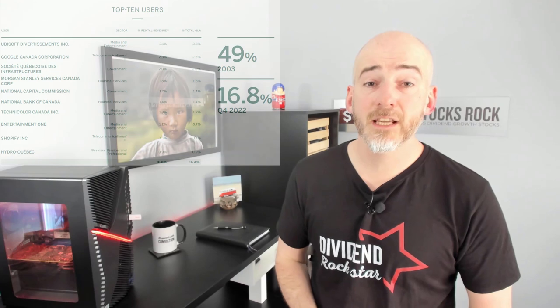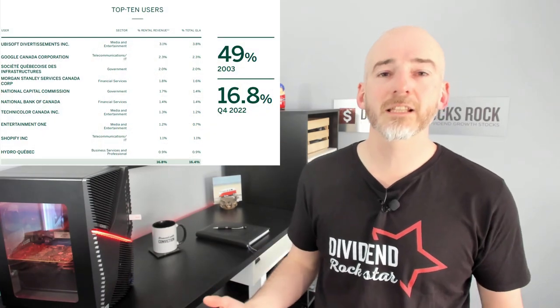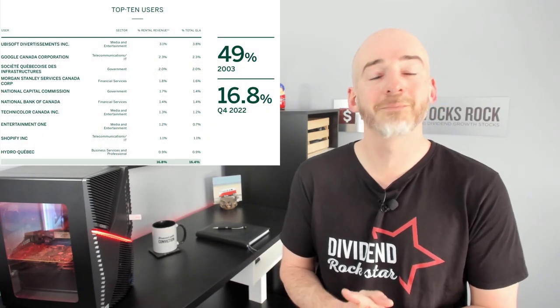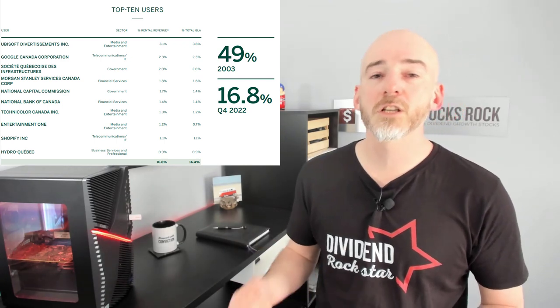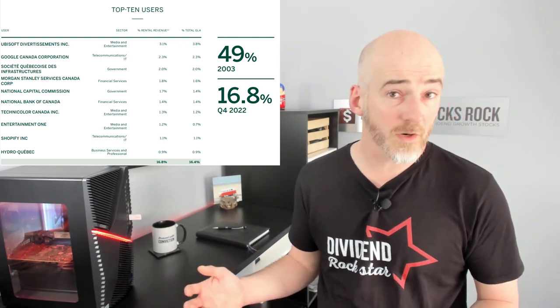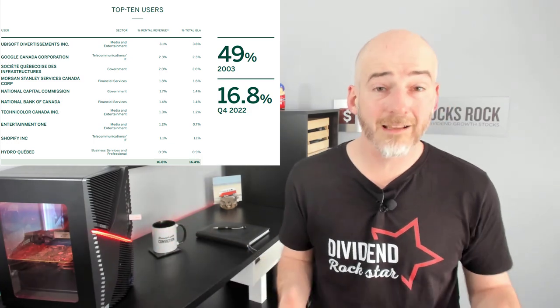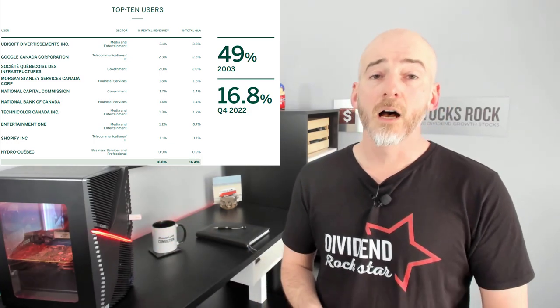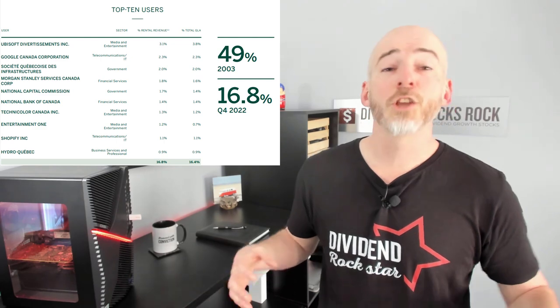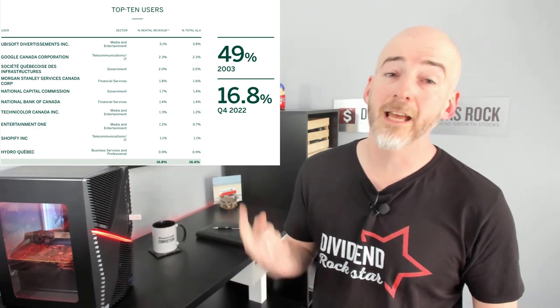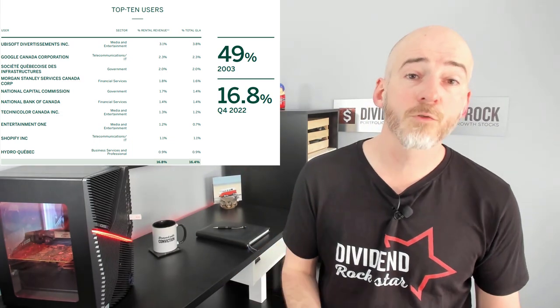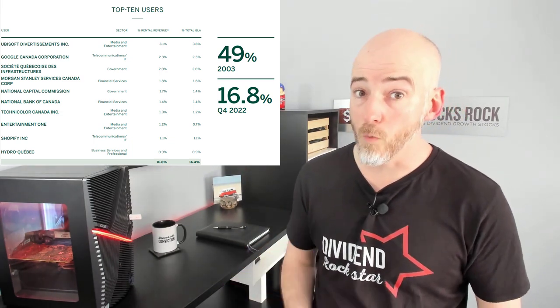Moving on quickly to tenant diversification: you can sleep easy here because only 17% of revenue is generated by the top 10 tenants. So it's pretty much anyone renting Allied Properties buildings. They don't have one major tenant that could create a big problem if they stop paying — that's not going to happen with them.